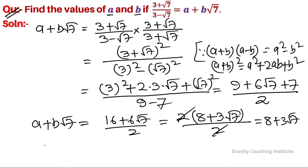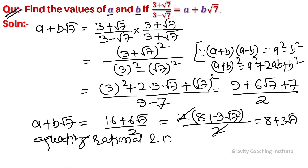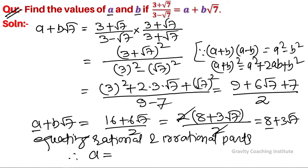After simplification, we equate rational and irrational parts. Equating rational and irrational parts, we get: equating the rational part, a = 8, and equating the irrational part, b = 3.